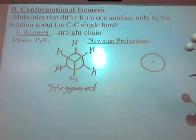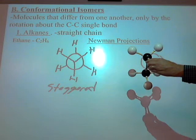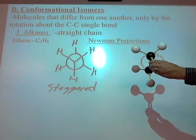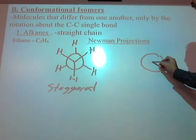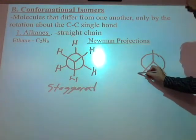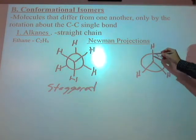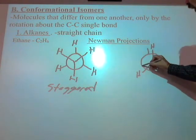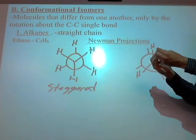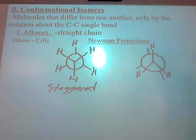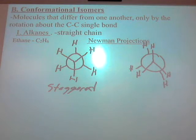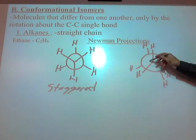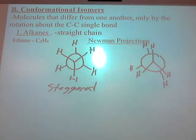Now to draw the eclipsed is a little more difficult. When they're eclipsed and I draw the shadow, it would be very difficult to draw perfectly, so I kind of have to tilt it a little bit. Depending on what you look up — pictures in the book or pictures online — it may be tilted slightly differently. I'll draw my first three like that, and the next ones just to the side, as if I took that thing and just tilted a little bit so I can still see the H's behind it. And this conformation is called eclipsed.